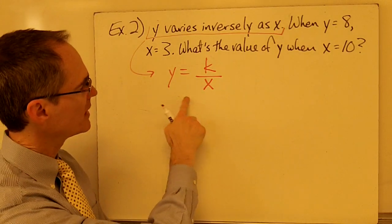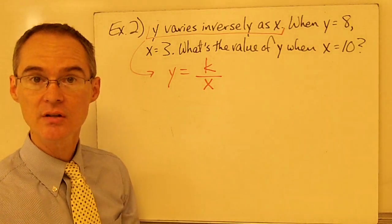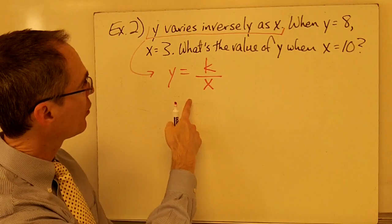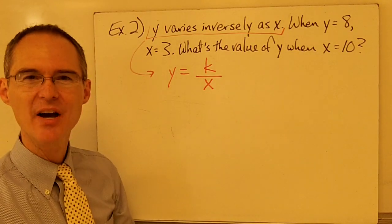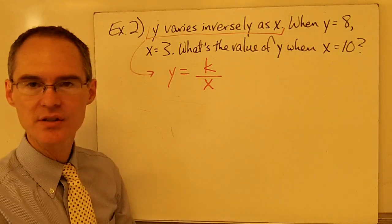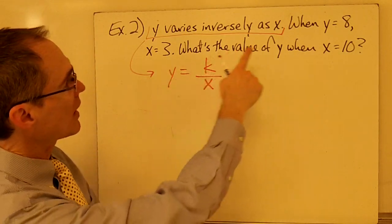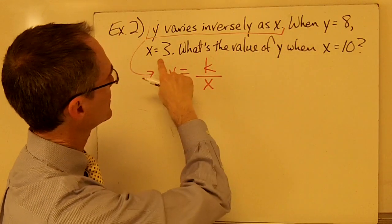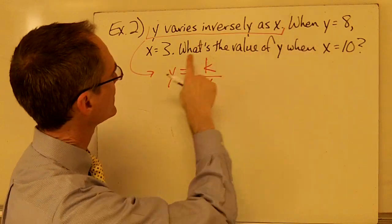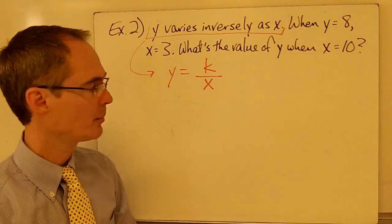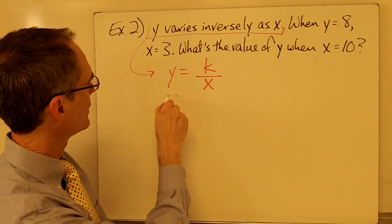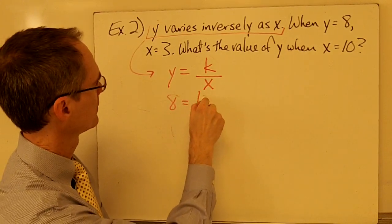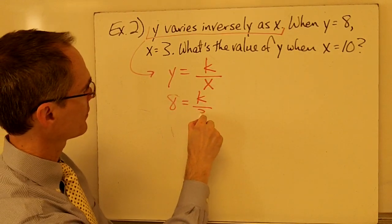This is going to be an inverse variation function. And just like before, the first thing I want to do is figure out what is my value of k. That's called the constant of variation. So, I can figure that out based on this information here. It tells me when y equals 8, x equals 3. So, I plug those values in. y equals 8, x equals 3.